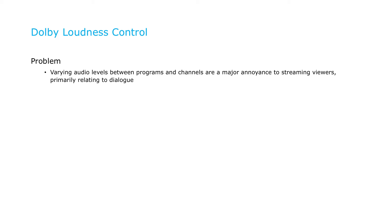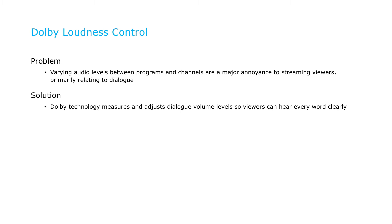Now that we have our standalone file, let's look at the loudness control. Briefly, large variations in volume levels between programs are a major source of user complaints. To address this, Dolby Audio measures the loudness of the content and automatically adjusts the playback level so listeners don't need to ride the volume knob. From a workflow perspective, you measure loudness with a tool like the Dolby Professional Loudness measurement solution, prioritizing loudness of the dialog whenever present, and then insert that value into the encoding dialog.